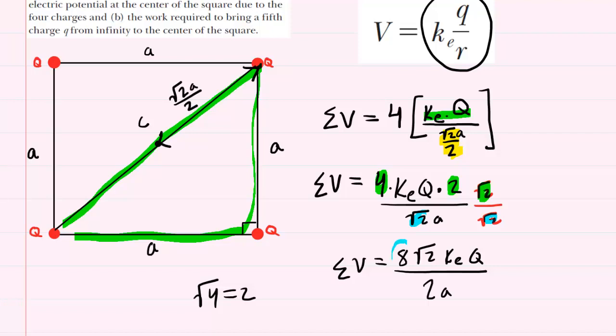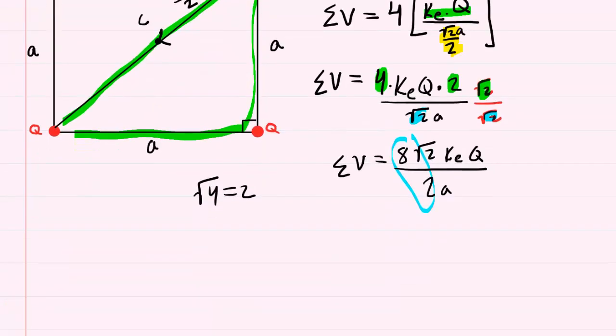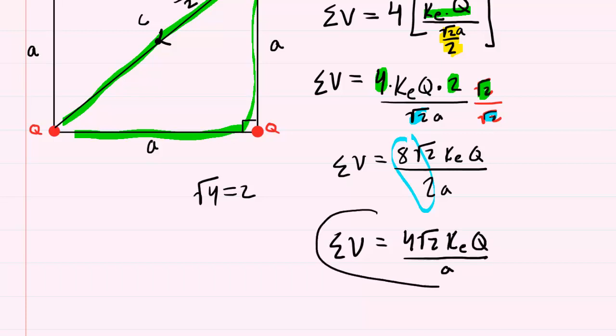And then finally, we can divide the 8 and the 2, and that's just going to give us 4. So the final expression will be 4 radical 2, k sub e, capital Q, all divided by A. So this would be the correct answer to part A.